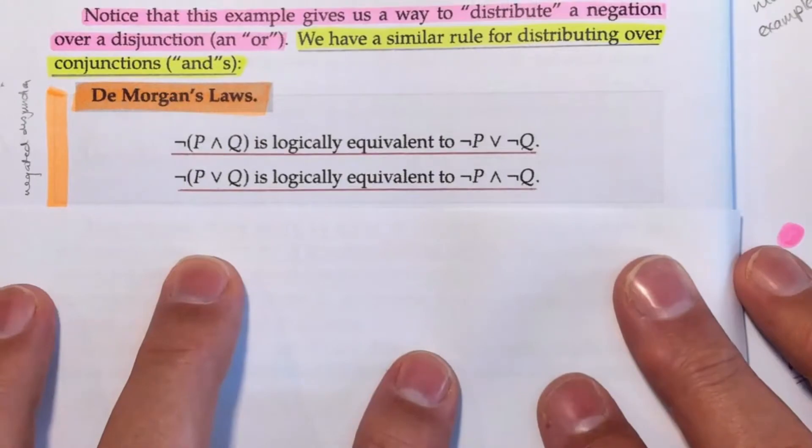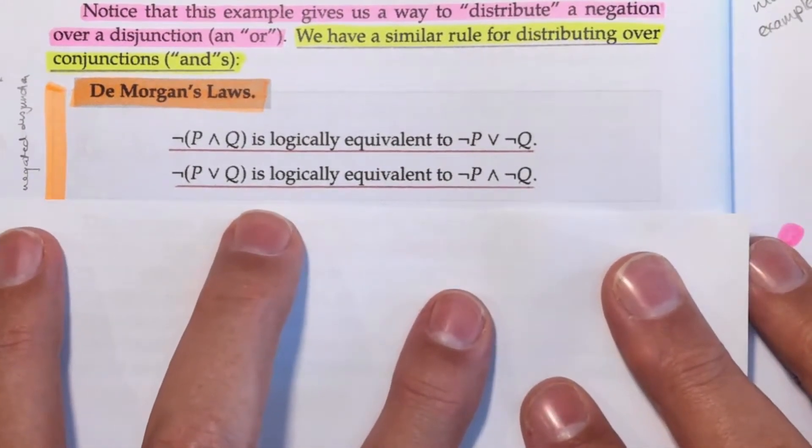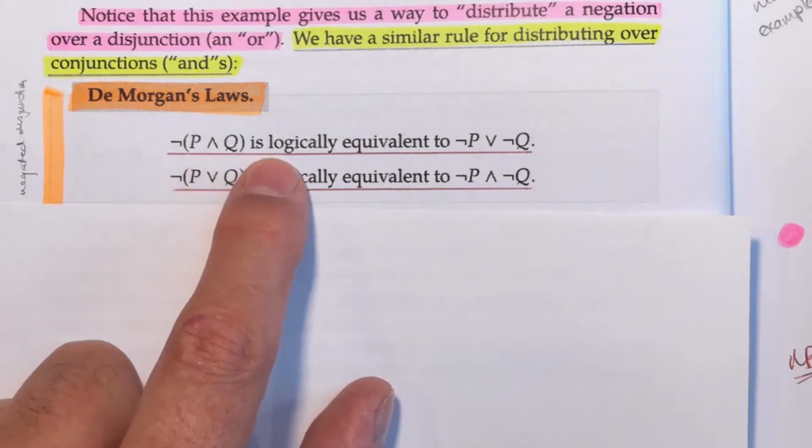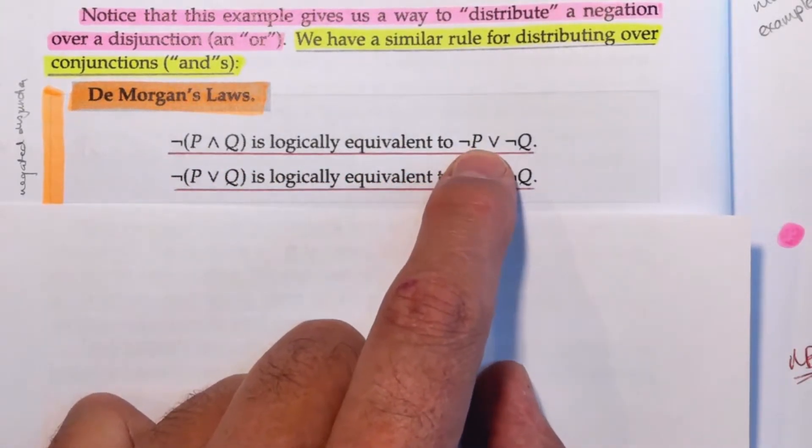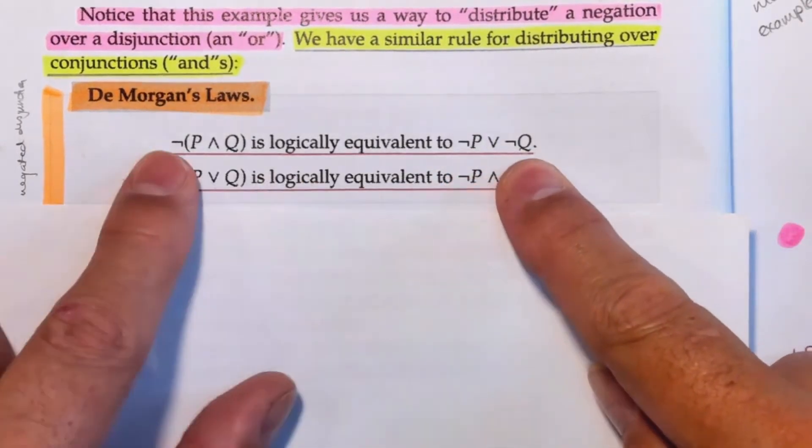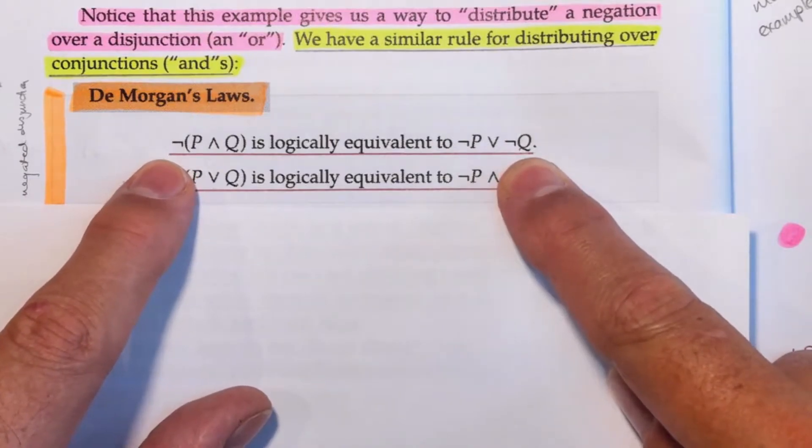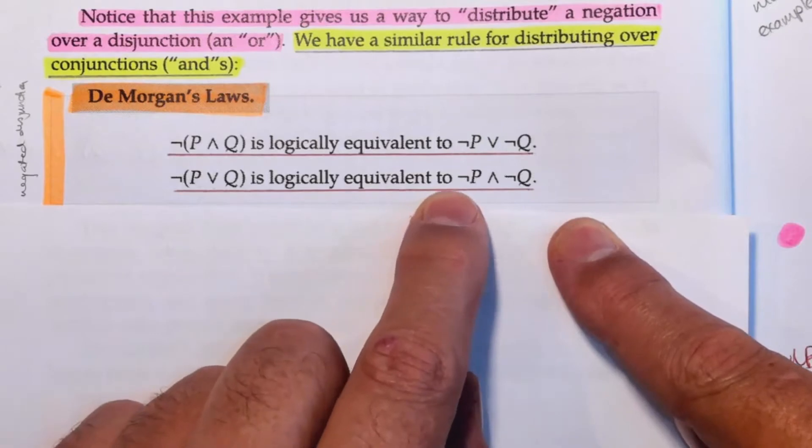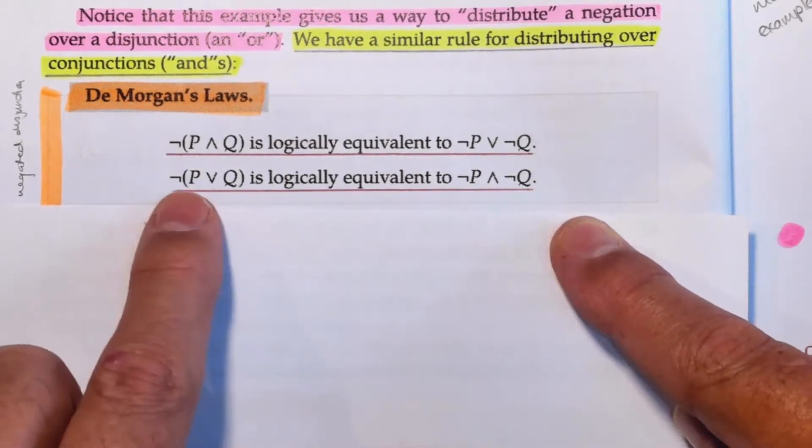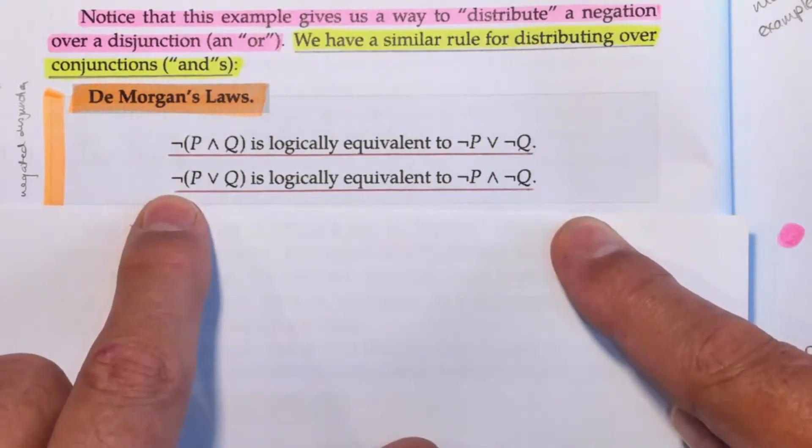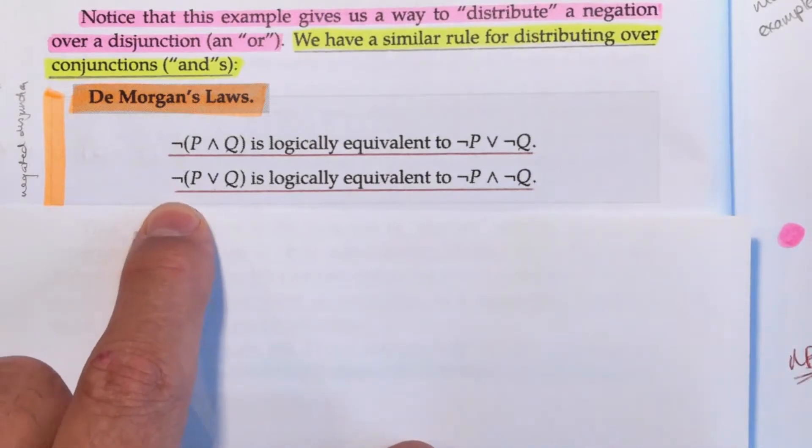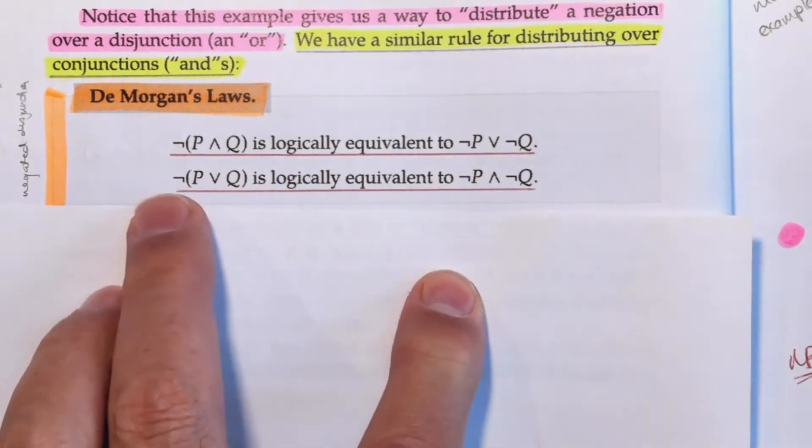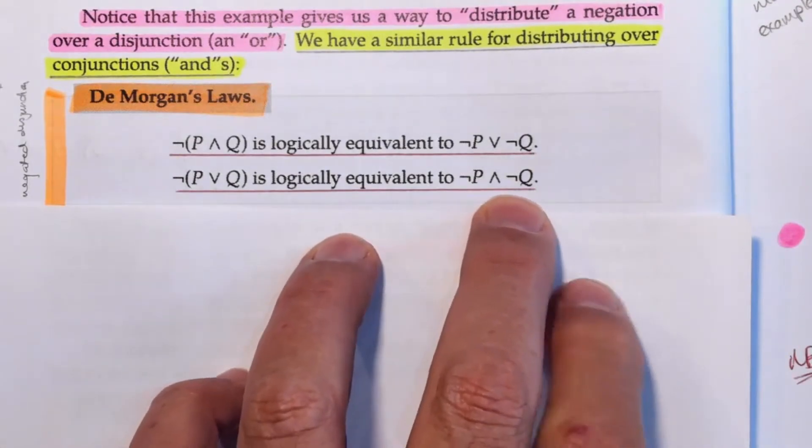Let's see what DeMorgan's Laws tells us. It negates a disjunction and a conjunction. It says here, NOT P and Q is logically equivalent to NOT P or NOT Q. Now this should ring a bell in your head, from what we did in chapter zero. Here, NOT P or Q is logically equivalent to NOT P and NOT Q. So you can see how it distributes the negation over the conjunction and the disjunction. First of all, NOT P and Q becomes NOT P or NOT Q. NOT P or Q becomes NOT P and NOT Q.